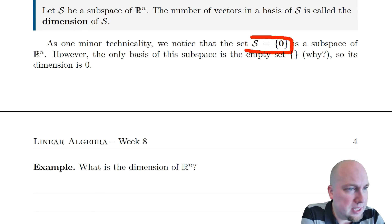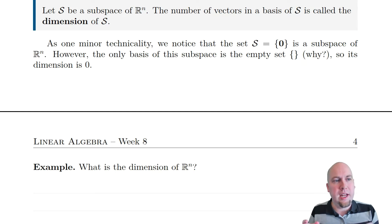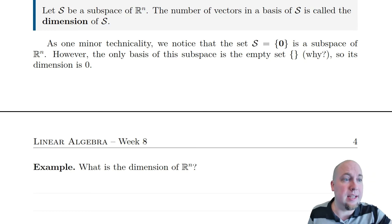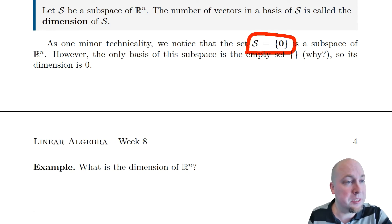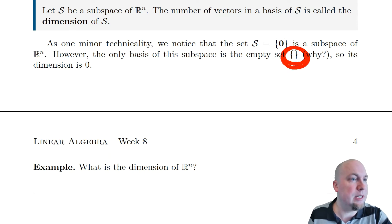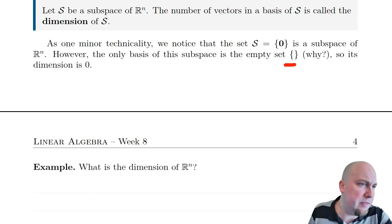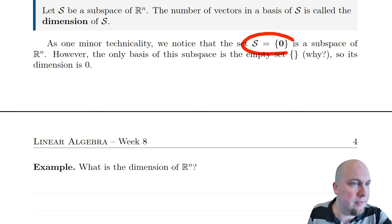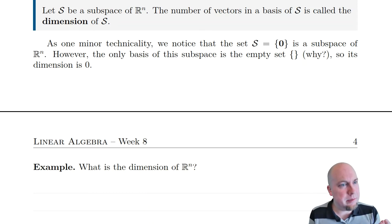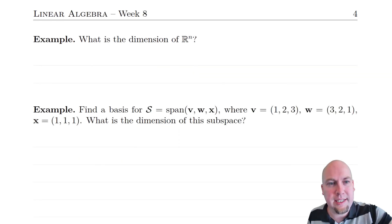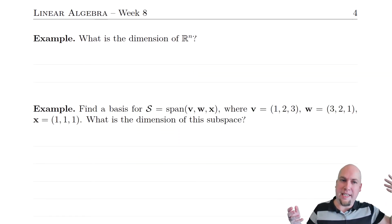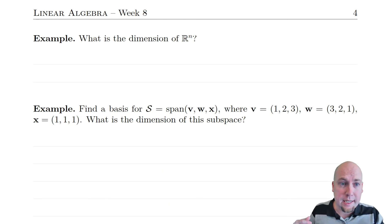As one minor technicality: the zero subspace — the subspace consisting of just the zero vector — is special in that it actually only has one basis, and that is the empty set. So the dimension of the zero subspace is zero, because there are zero vectors in that basis. Once we go on to higher-dimensional things, it matches up with our intuition fairly well.